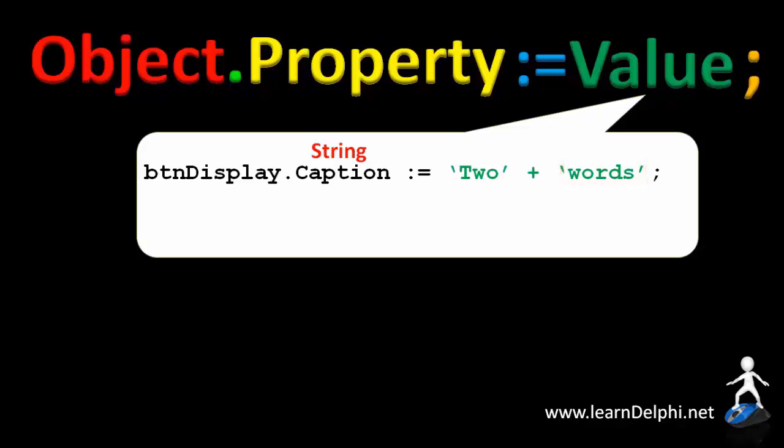When joining a string, we refer to it as concatenation, and the plus sign is called a concatenation operator. The result that will be assigned to the caption property is two words, without a space between them. To allow a space between the words, you must also make a space before closing the first word with an inverted comma. A space is therefore also a string character. The result will then be two words, now with a space separating the values.